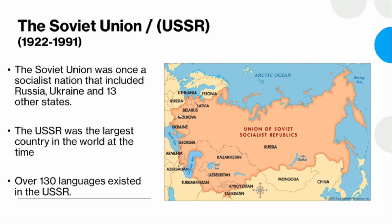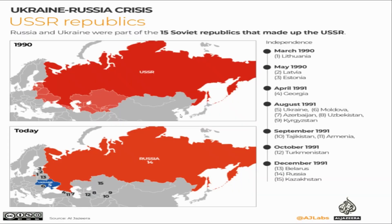Communism, or the Soviet Union, started in 1917 and ended in 1991. Including Russia, there were 15 republics, making the USSR the largest country in the world. In the 1990s, starting with East European republics, they began gaining independence. This map shows the difference between 1990 and today — Lithuania, Latvia, and Estonia gained independence, and in August 1991, Georgia, Ukraine, Moldova, Azerbaijan, Uzbekistan, and Kyrgyzstan also gained their independence.